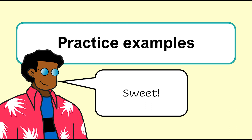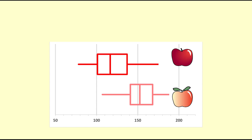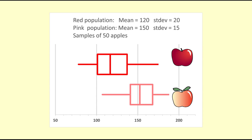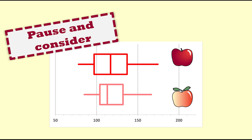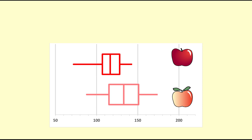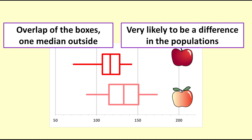Practice examples. For each of the pairs of box plots, decide if there is a clear difference, a likely difference, or no difference. What conclusion would you come to? Pause and have a think about it. The boxes do not overlap at all — it is clear evidence that the median weight of the pink apples is greater than that of the red apples back in the population. When we look at the underlying distribution, we can see that the difference back in the population is 30 grams. Here's another example: for these box plots there is considerable overlap, and both the medians are inside the other box — there is no evidence of difference in the population. And another example: in this pair of box plots, the boxes do overlap, but one of the medians lies outside the box of the other sample — there is likely to be a difference between the medians back in the population.